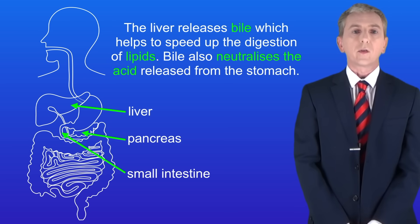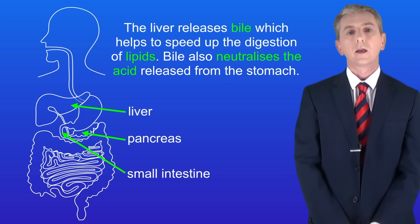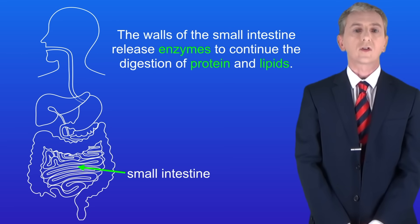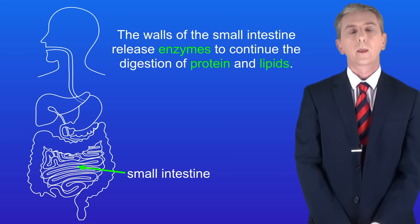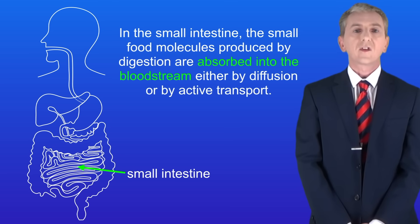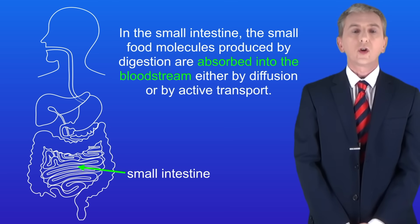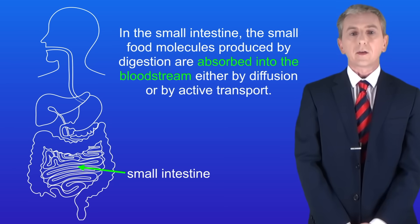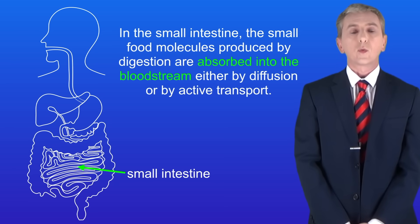The fluid makes its way down the rest of the small intestine, where the walls release enzymes to continue the digestion of protein and lipids. In the small intestine, the small food molecules produced by digestion are absorbed into the bloodstream either by diffusion or by active transport, and we'll be looking at that again in a later video.